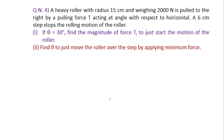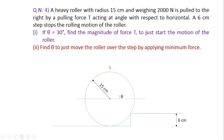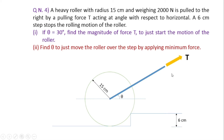Welcome back to the channel. Today we will solve one interesting problem based on the sphere. This question was asked many times in the Mumbai University question paper, so you can mark it as very very important. It can be asked for four marks or eight marks. The question: a heavy roller with a radius 15 centimeter weighing 1000 Newton is pulled to the right by a pulling force T acting at an angle with respect to horizontal. A six centimeter step stops the rolling motion of the roller. If theta is equal to 30 degree, find the magnitude of the force to just start the motion.